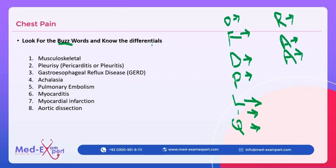Now we come to buzzwords. Musculoskeletal pain — if there is localized tenderness, positive pain elicited by touching, or association with respiration, musculoskeletal pain is considered costochondritis.